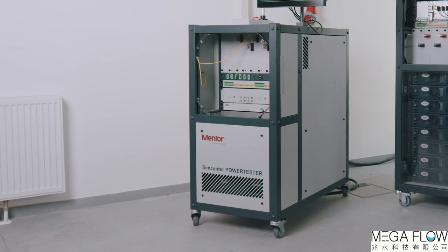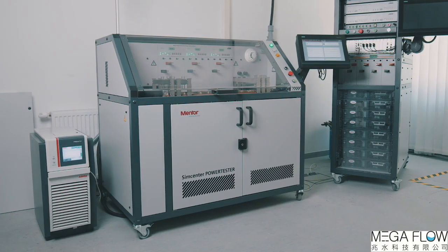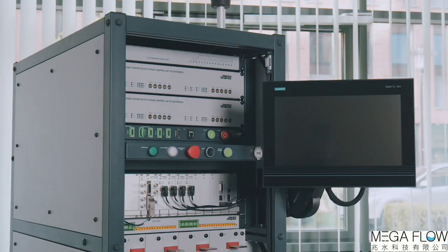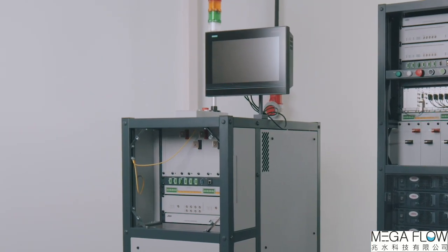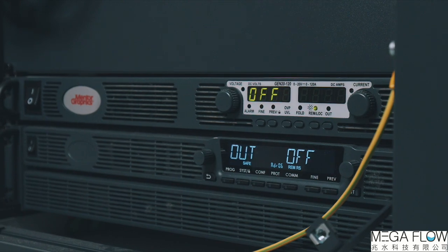We offer different versions of the measurement station covering device ranges from 10 to 3600A of current. In the next few minutes I'm going to show you the operation of the SimCenter power tester through a measurement example. The system we are going to review today can output maximum 600A with output voltage up to 1800V.